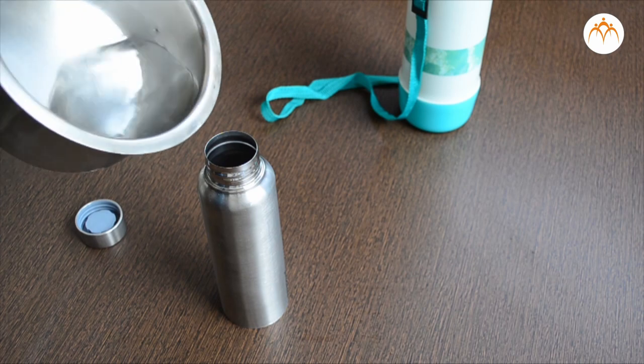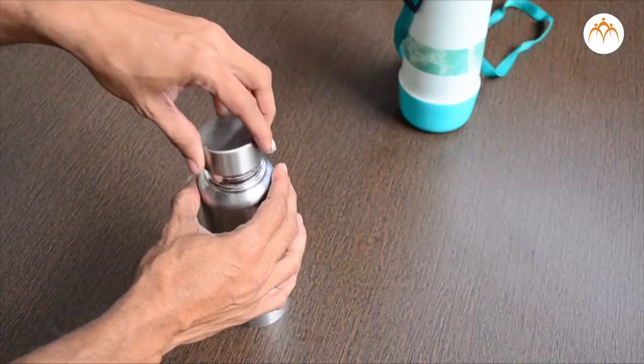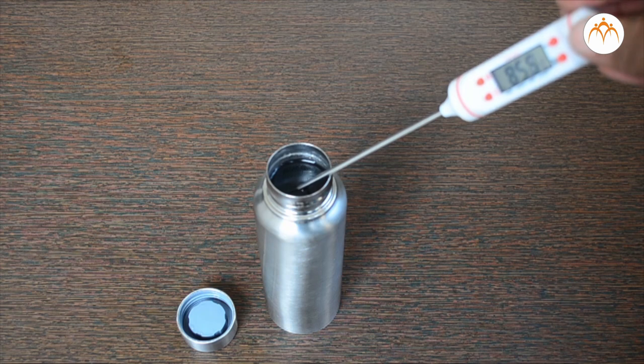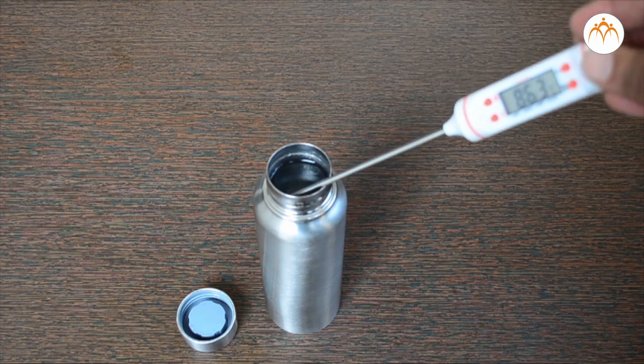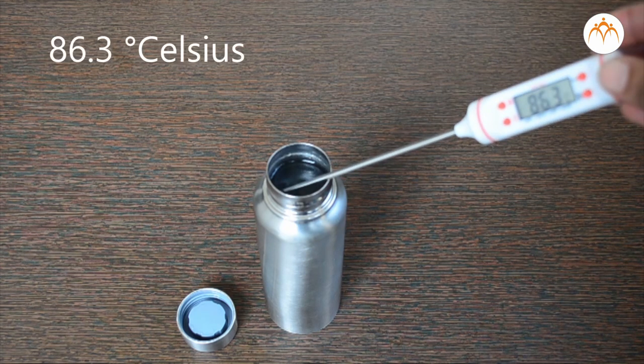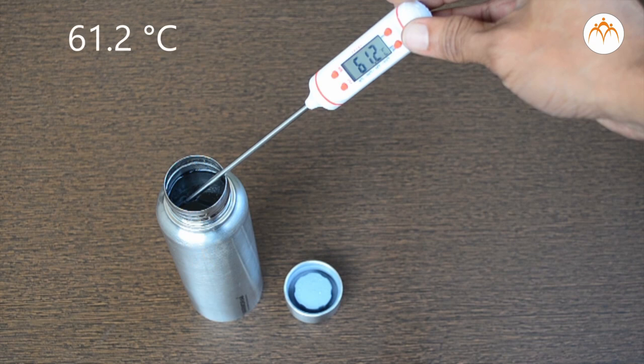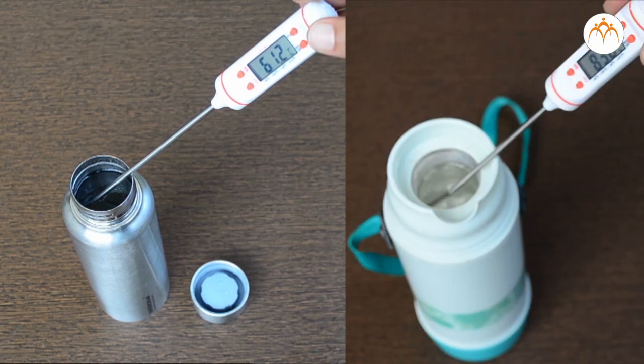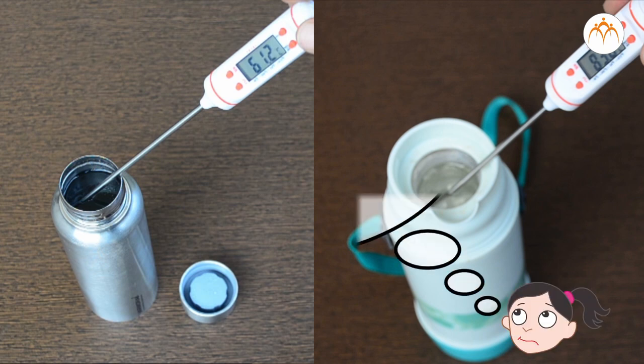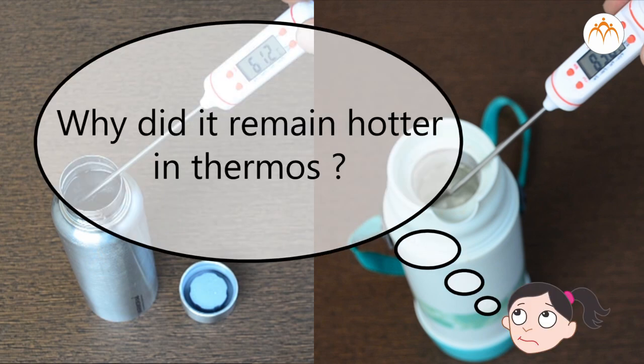Now, let us repeat the same activity with the steel jar. Initial temperature of water is 86.3 degrees Celsius. After one hour, its temperature is 61.2 degrees Celsius. Why it remained hotter in thermos than in steel jar?